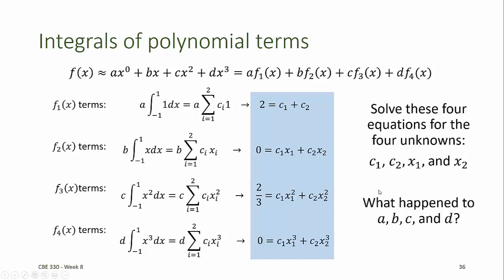You might ask, what happened to our a, b, c, and d, the coefficients here? Well, the coefficients cancel because a is on both sides of this equal sign, b is on both sides of this equal sign, c is on both sides of this equal sign, and d is on both sides of this equal sign. So we can just eliminate the polynomial coefficients.